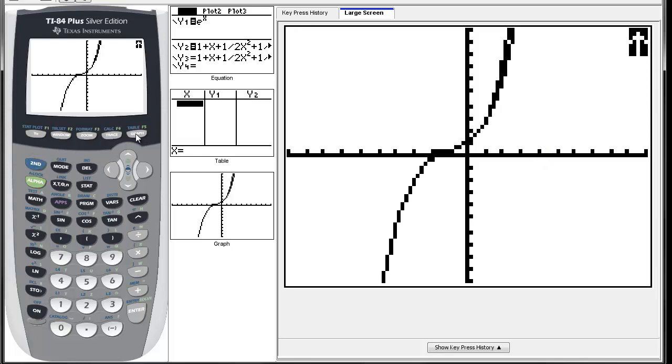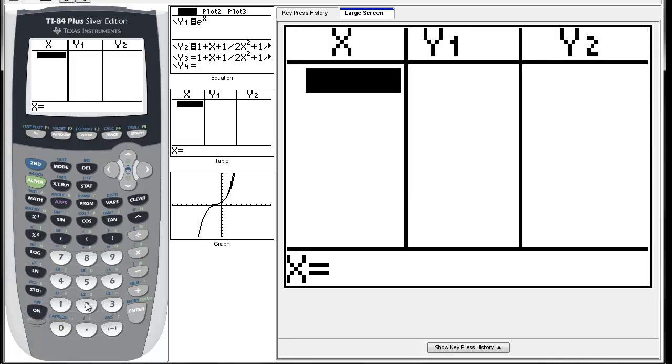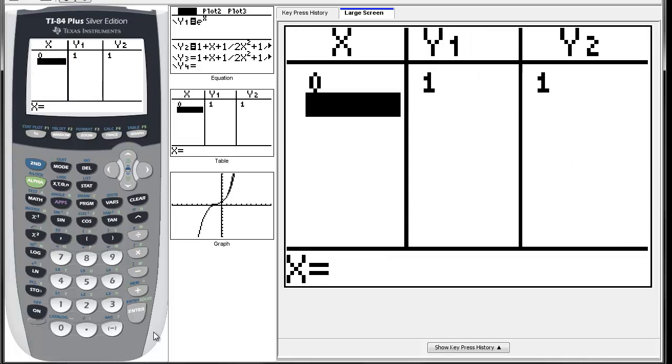To reinforce this, you can go to the table and try some values. We should be really accurate at zero, shouldn't we? We plug zero in and get back one for each function.